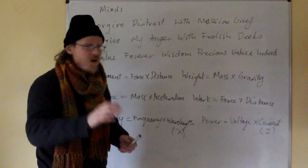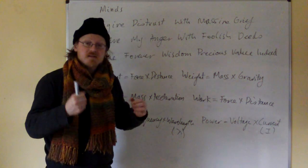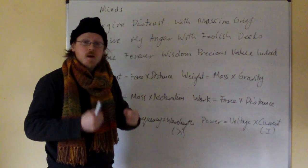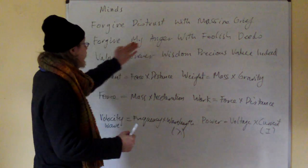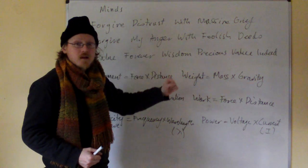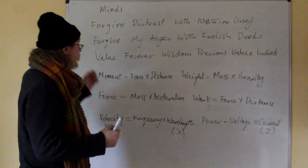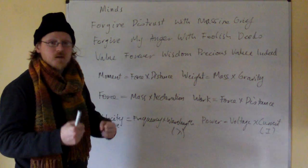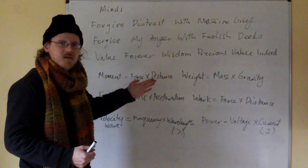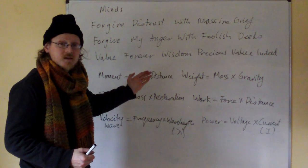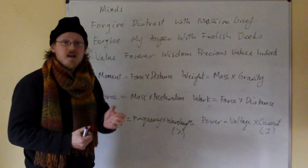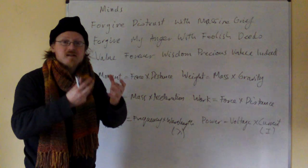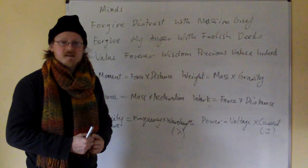The D tells us to divide; the M tells us to now start multiplying. 'Forgive distrust with massive grief. Forgive my anger with foolish deeds. Value forever wisdom. Precious value indeed.' And if you learn this verse, you will basically learn the centre, the crux, the middle of GCSE physics. Thank you very much.